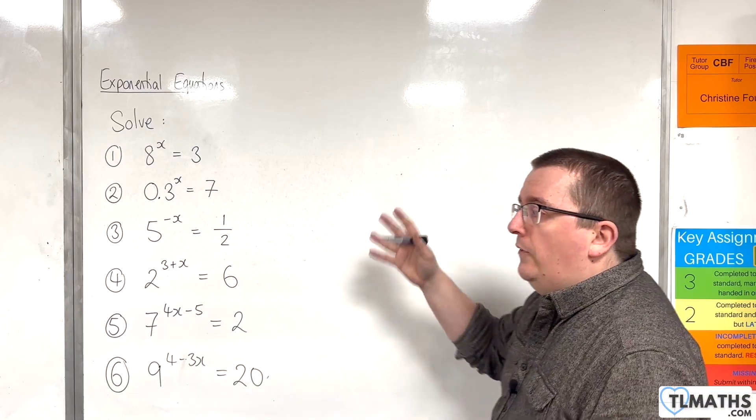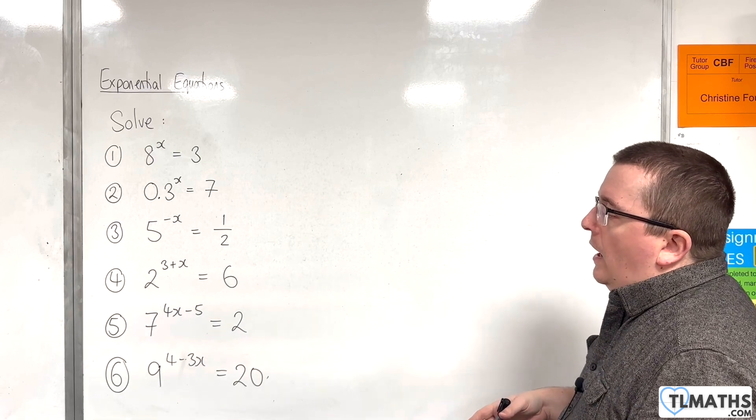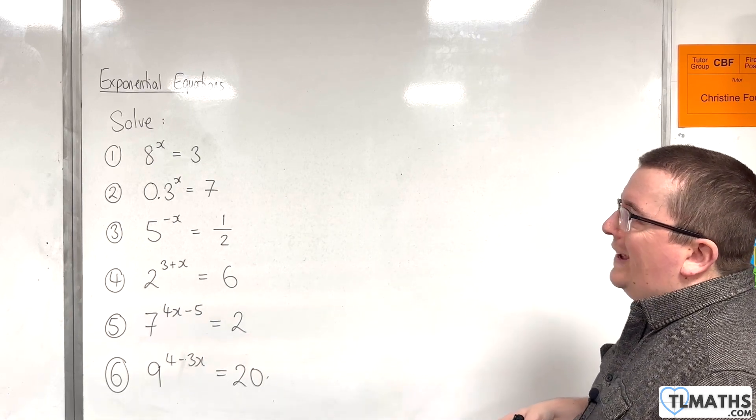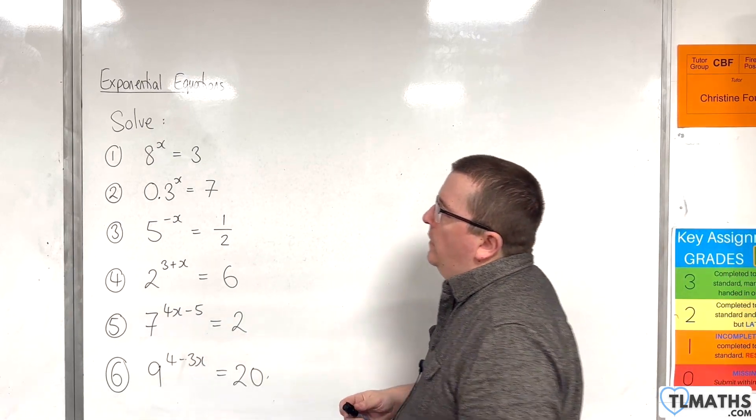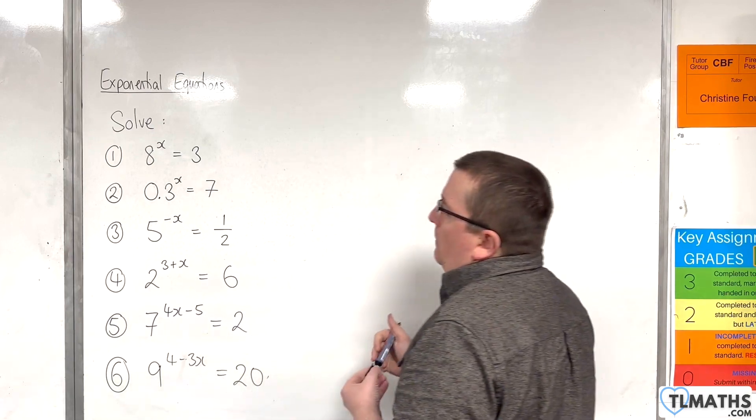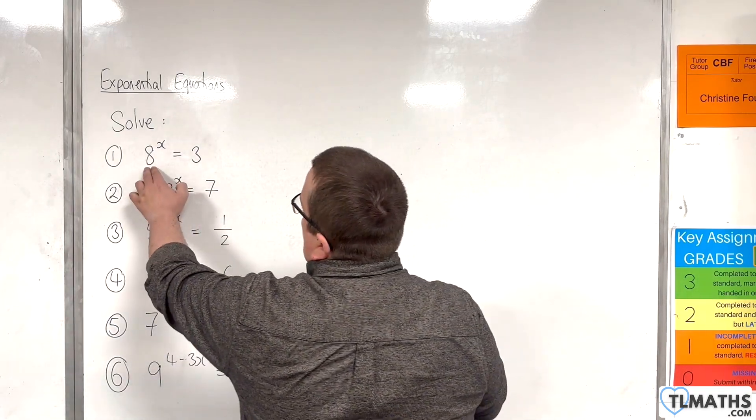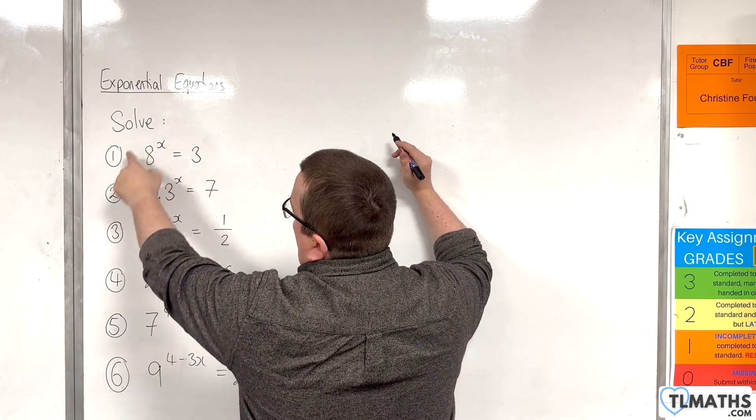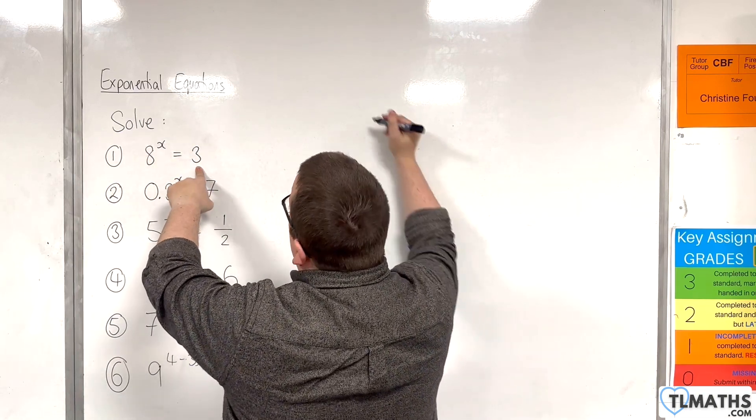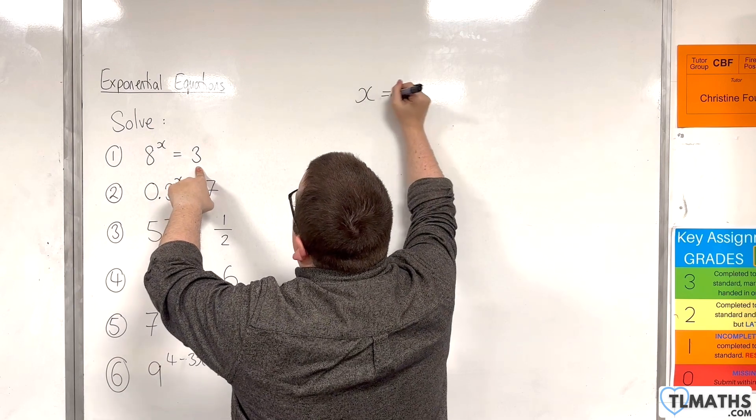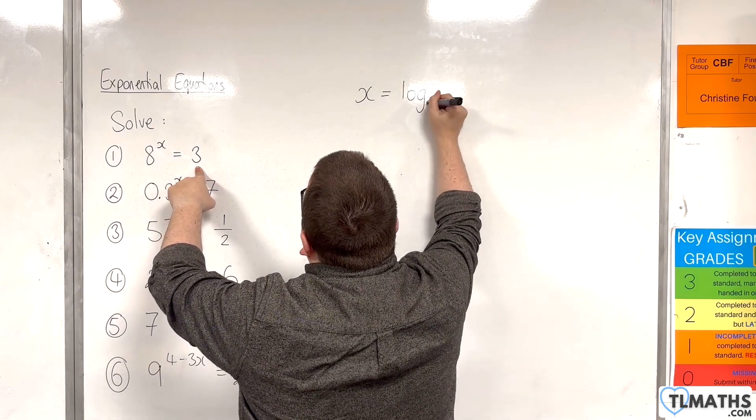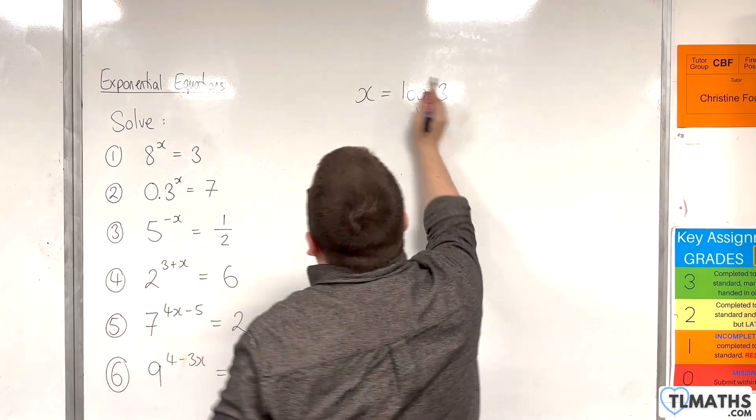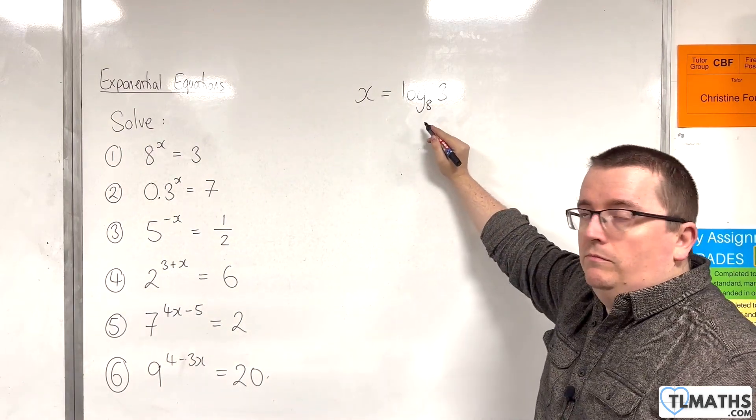In this video, I want to go through a series of examples where we are solving exponential equations. For our first one, we have 8 to the power of x is equal to 3. This is currently in exponential form, so we're going to write that in logarithmic form by writing that as x is equal to log base 8 of 3. And that is the solution to number 1.